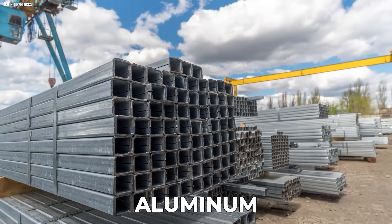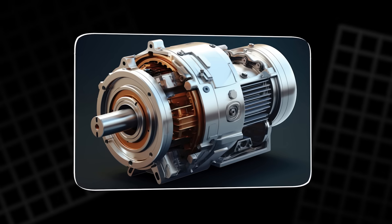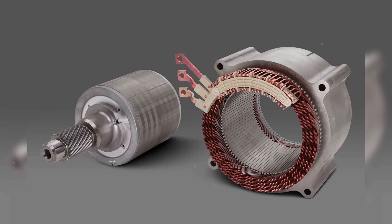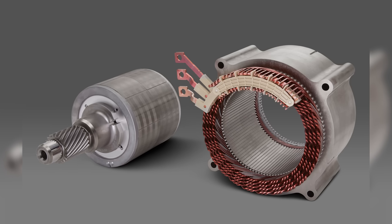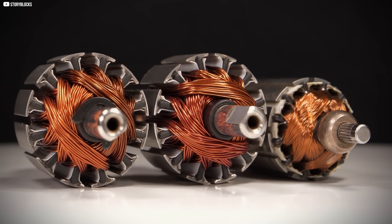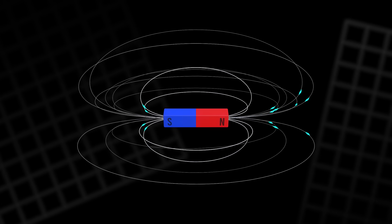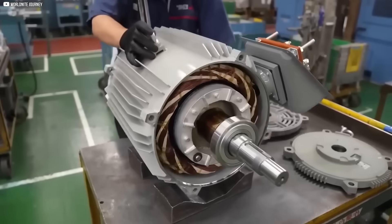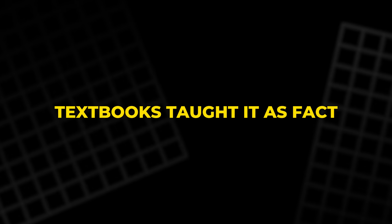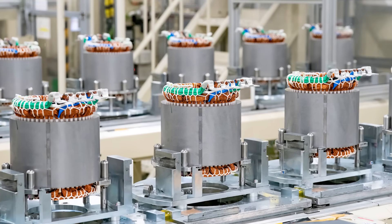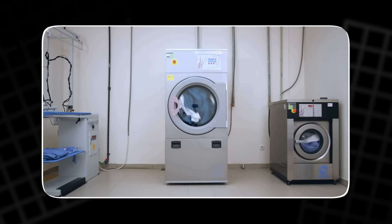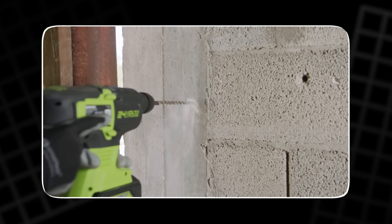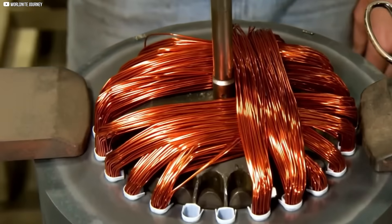Then came aluminum. Lighter and cheaper than copper, it found its place in certain motor designs where weight mattered more than efficiency. Still, both materials had the same core job. Guide electrical current through tightly wound coils, create magnetic fields, and produce motion. This formula became so ingrained in engineering culture that few people even questioned it. Textbooks taught it as fact. Manufacturers built entire industries around it. Every electric car, drone, washing machine, and power tool owes its heartbeat to this simple metal and magnet relationship. But as technology pushed boundaries, cracks started to show.